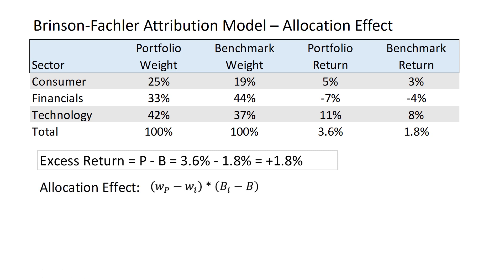Let's take a look at the allocation effect. It can be described with a simple equation. We basically want to know, did we overweight or underweight a sector? So WP minus WI — that's like 25% minus 19% — so we overweighted consumer stocks by 6%. Then we look at what the benchmark returned in consumers: it was 3%. And what was the overall benchmark return? 1.8%. So we're comparing sector returns to the overall benchmark return — that's BI minus B. Since consumer stocks were up 3% versus the overall benchmark return of 1.8%, we overweighted a sector where returns were good, so the allocation effect to consumers has got to be positive.